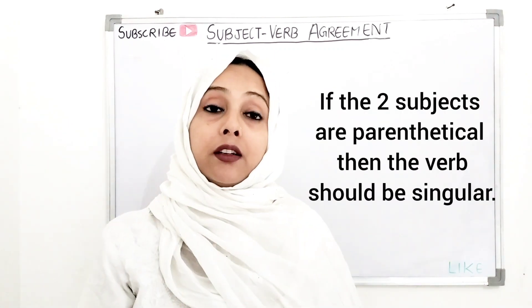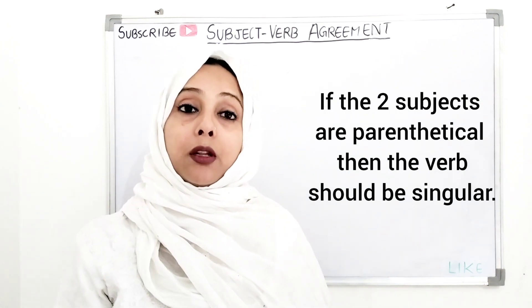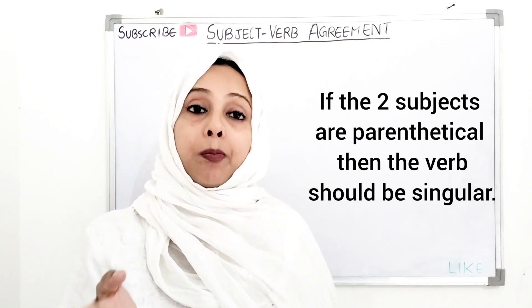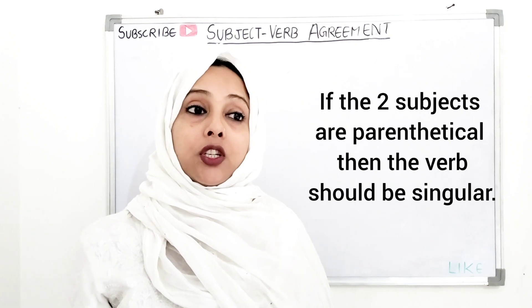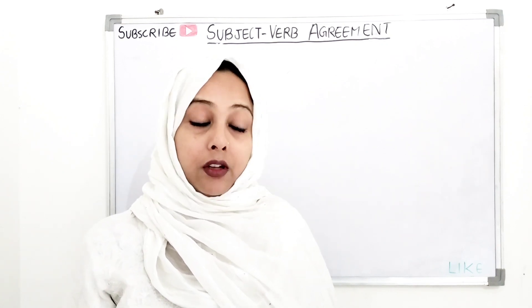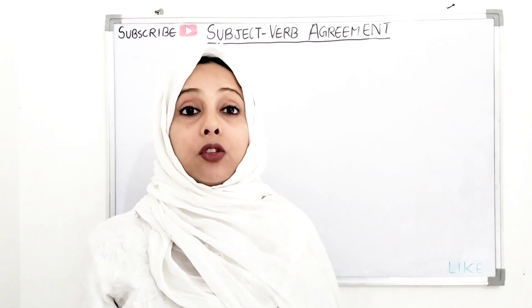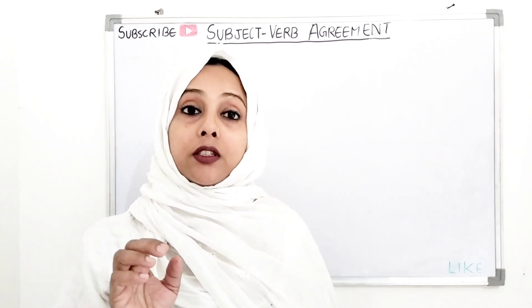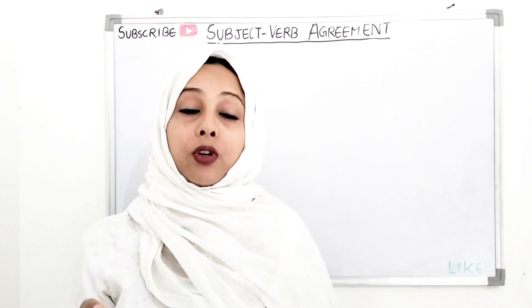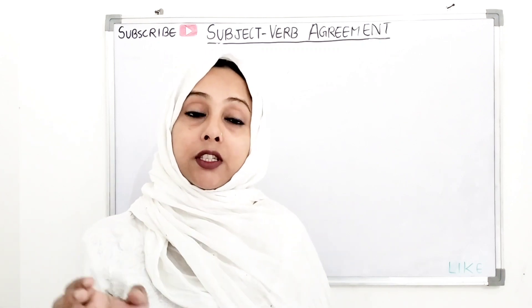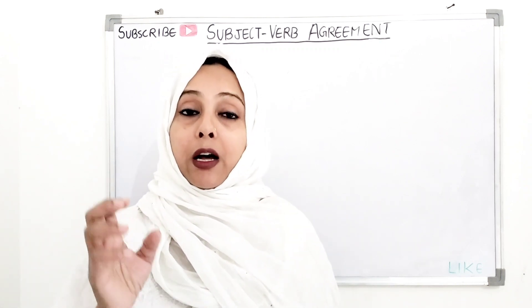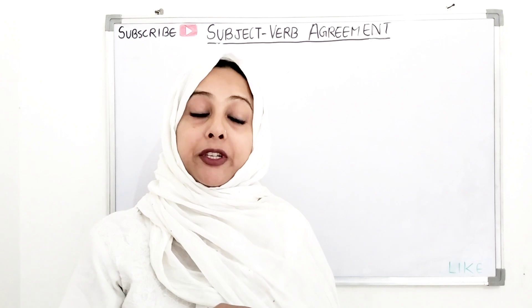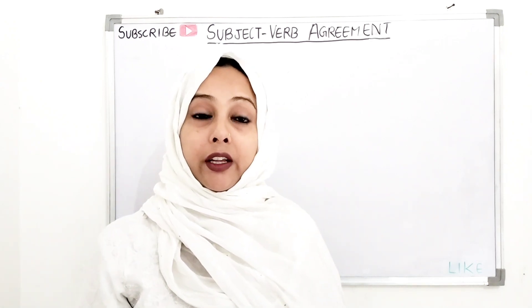If the subject is parenthetical — meaning a part of the subject is connected to another subject — then we also use a singular verb. For example: 'The house with its contents is insured.' The contents are part of the house. In such sentences where a subject is used as a parenthetical subject with 'with' or 'as well as,' we use a singular verb. Another example: 'The ship with its crew was lost.'